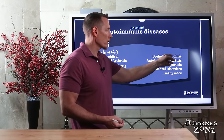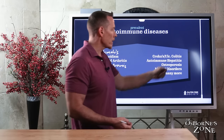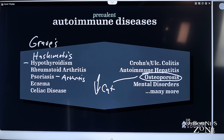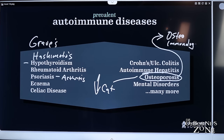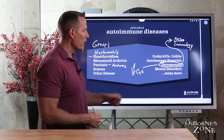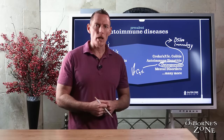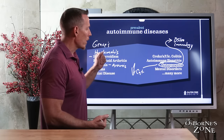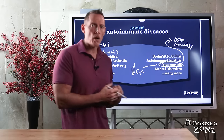Celiac disease is also autoimmune, as are Crohn's and ulcerative colitis, autoimmune hepatitis which is liver dysfunction, and osteoporosis. Most people have been told that osteoporosis is a deficiency of calcium and minerals, but there's an entire new chapter in research called osteoimmunology — the study of autoimmunity as a primary driving force behind bone loss. We also have mental disorders like schizophrenia, bipolar disease, ADHD, Asperger's, and autism, many of which are also autoimmune in nature.